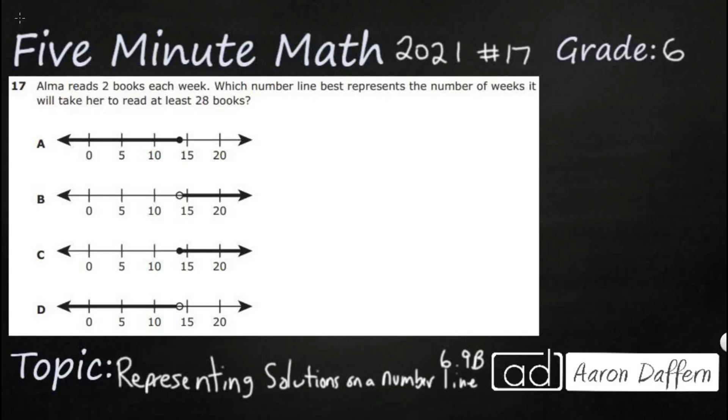Hello and welcome to 5-Minute Math. Today we are looking at the 6th grade concept of representing solutions on a number line. This is standard 6.9b in the great state of Texas, and we are using item number 17 of the 2021 released STAAR test.